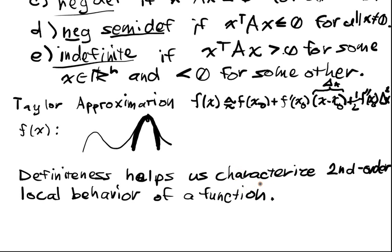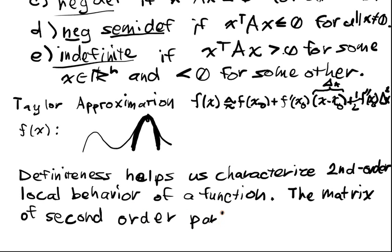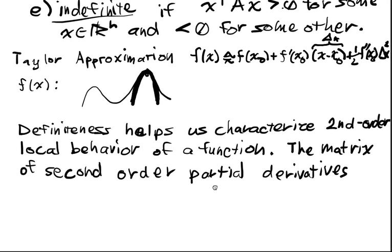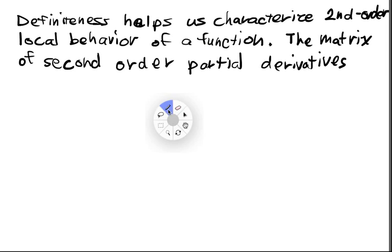In order to actually move this from one dimension into higher dimension, we have to have what's known as the Hessian. The matrix of second order partial derivatives.